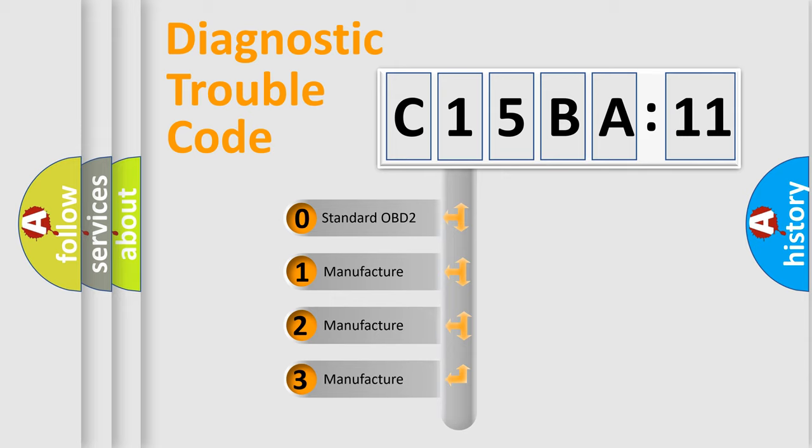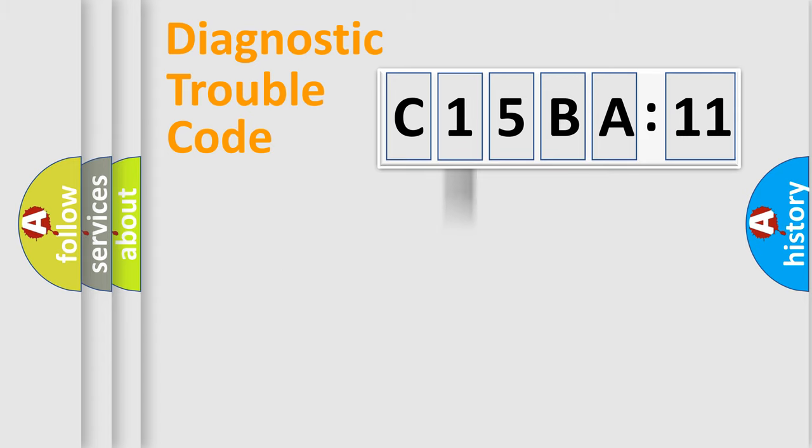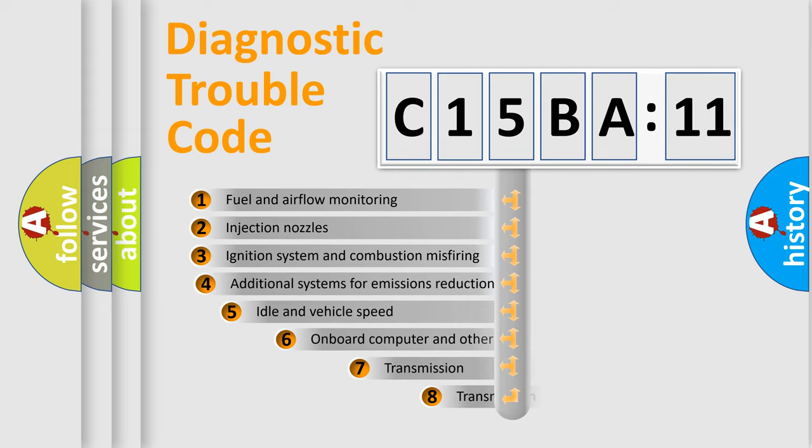If the second character is expressed as zero, it is a standardized error. In the case of numbers 1, 2, 3, it is a manufacturer-specific expression of the car-specific error.